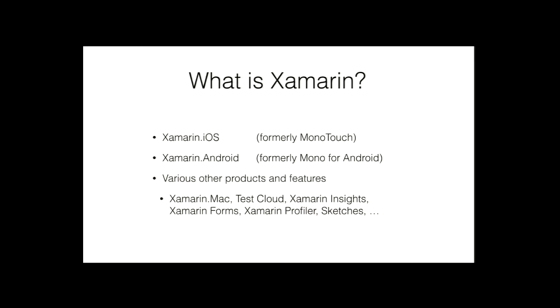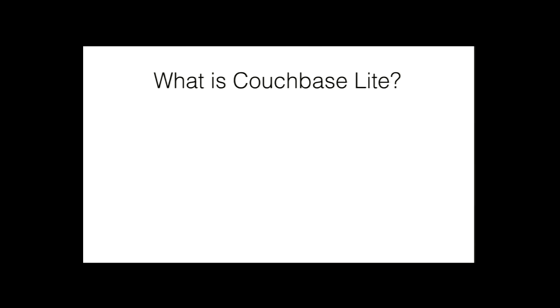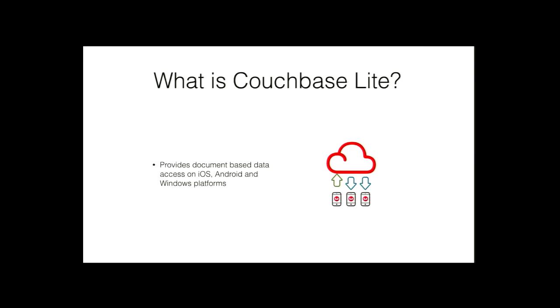So what's Couchbase Lite? Many of you probably know more about it than I do. Couchbase Lite provides document-based data access on these platforms — all the platforms that Xamarin and Microsoft target too, which is interesting. There are different flavors: you can use it in Objective-C, Java, and everything works through a REST API so JavaScript developers are in good shape. But it's really nice from .NET — they created a nice API that seems very idiomatic for a .NET developer.